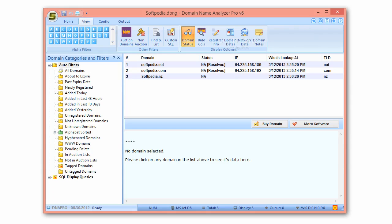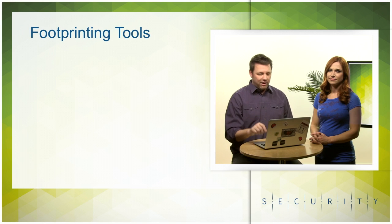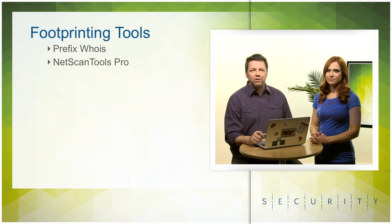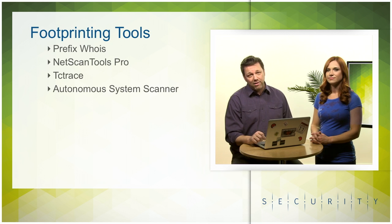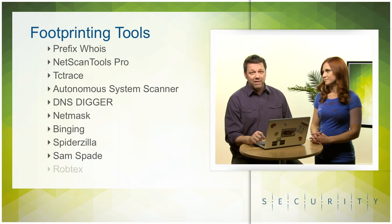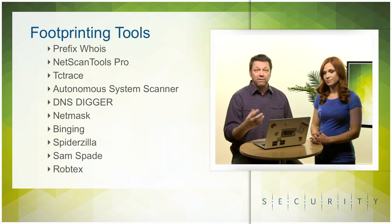Domain Name Analyzer Pro supports the display of additional data such as expiry and creation dates, name server information, tagging domains, and secondary whois lookups. We have highlighted a few footprinting tools here: Prefix Whois, NetScan Tools Pro, TC Trace, Autonomous System Scanner, DNS Digger, NetMask, Binging, Spiderzilla, Sam Spade, and Robtex. You can browse the details on their respective websites.